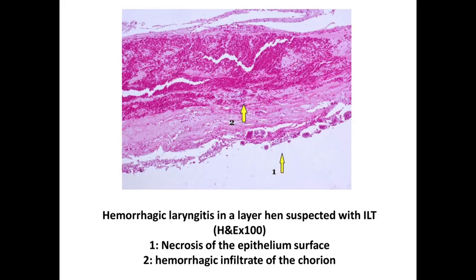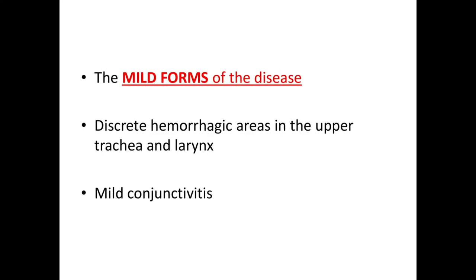Here you can see an H&E-stained lesion magnified to 100x of hemorrhagic laryngitis. The arrow marked as one shows necrosis of the epithelium surface, and arrow two shows hemorrhagic infiltrate. Desquamative necrotizing tracheitis is a characteristic microscopic finding. The mild forms of the disease show discrete hemorrhagic areas in the upper trachea and larynx, and also mild conjunctivitis.